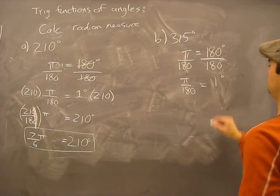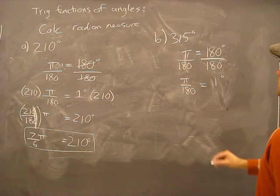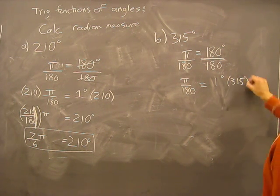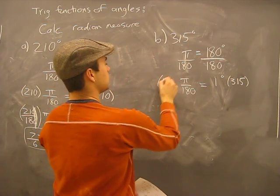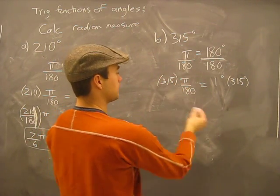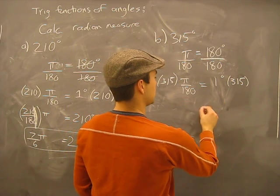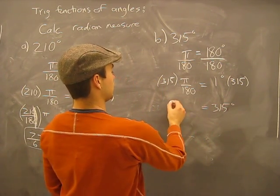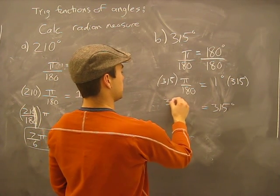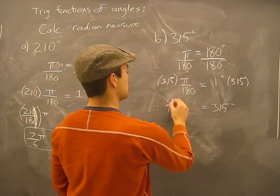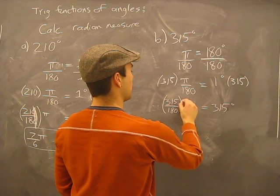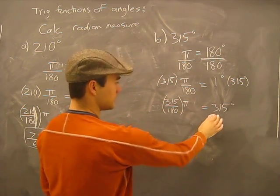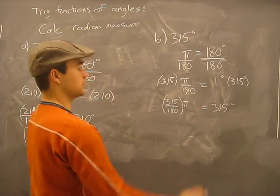Same as saying 1 degree. But I'm looking for 315 degrees. So I'm going to have to multiply this 315 times. What do you do to one side? You do to the other. So you end up with 315 degrees on this side equals 315 over 180 times π radians. This is the radian measure.